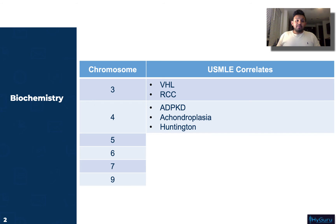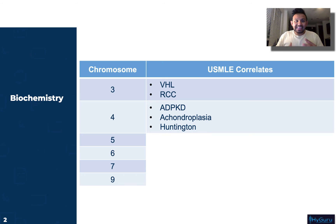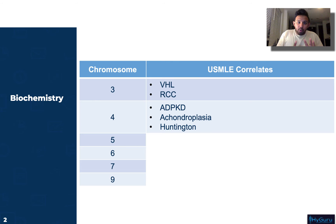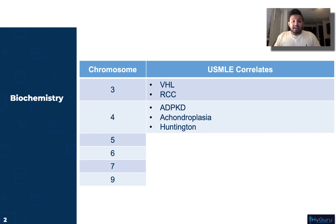Huntington's disease is also related to chromosome number four. The classic presentation is a 40-year-old patient with those writhing, choreoathetoid, dancing-like movements. These patients can also be a little more aggressive or have inappropriate laughter. On USMLE questions they may make it seem like we're going down the psychosis or ingestion route, but that choreoathetoid movement usually gives it away. Remember this is related to CAG trinucleotide repeats — that trinucleotide repeat is very high yield.